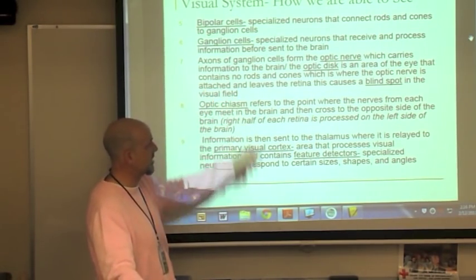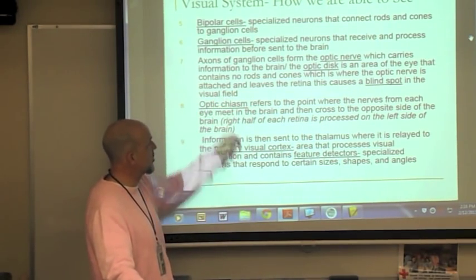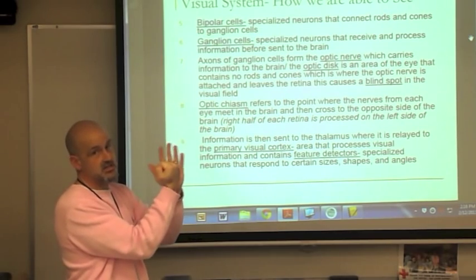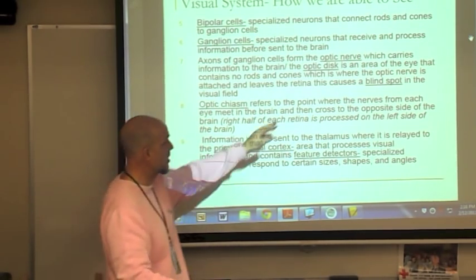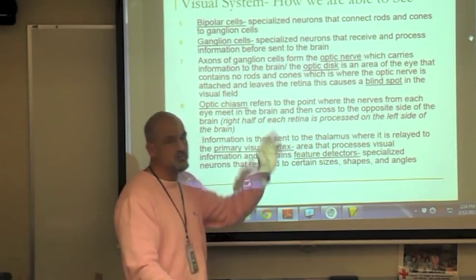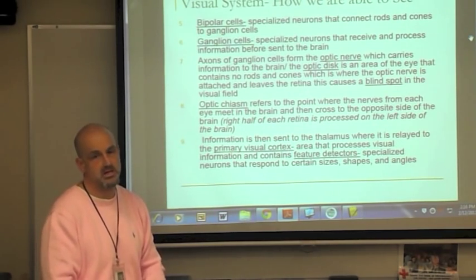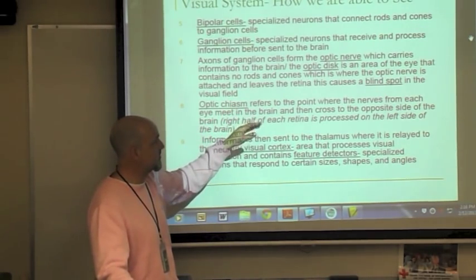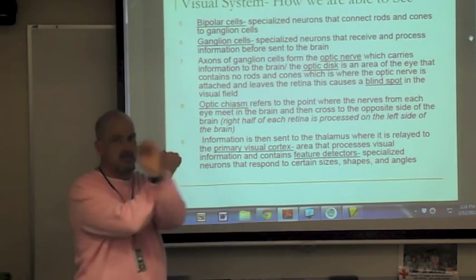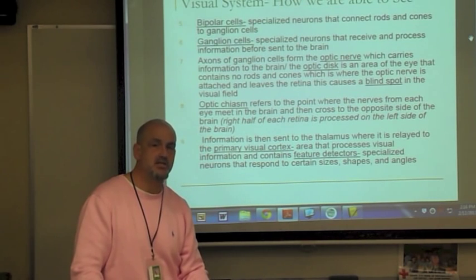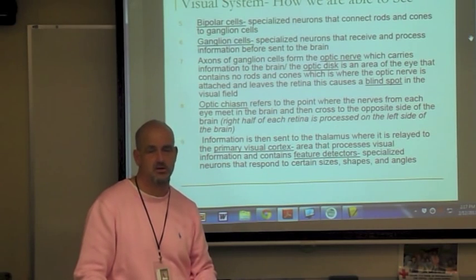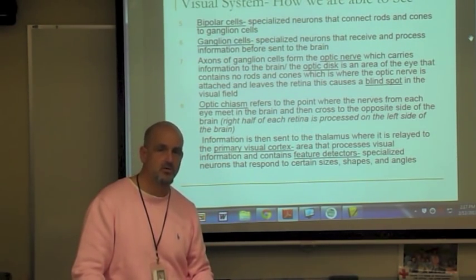The optic disc is the area of the eye containing no rods or cones, where the optic nerve is attached to the retina. This produces a blind spot in the visual field. Because we have two eyes, we never notice this blind spot — one eye accommodates for what the other can't see. The optic chiasm — shaped like an X — is the point where nerves from each eye meet and cross to opposite sides: the left side of the retina sends information to the right side of the brain, and vice versa.